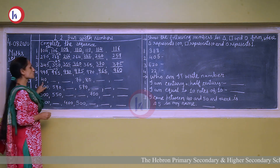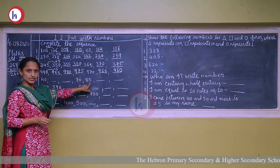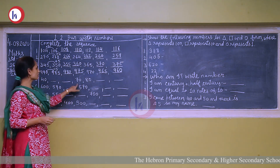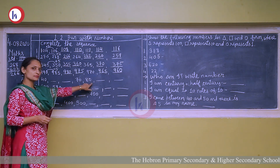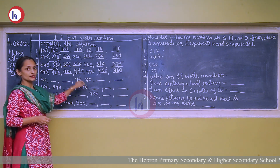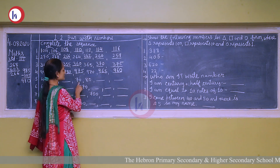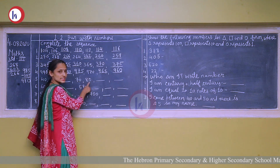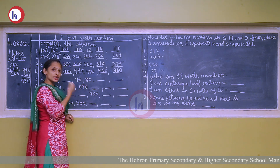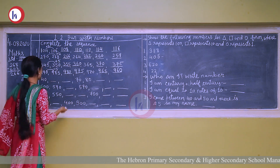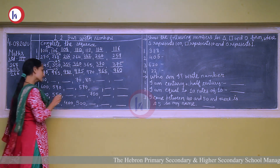Next: 40, 70, 80. Here numbers are also increasing, so it is a forward counting. Now find the difference: 70 and 80 — here 10 numbers are increasing. So we will add 10 each time.